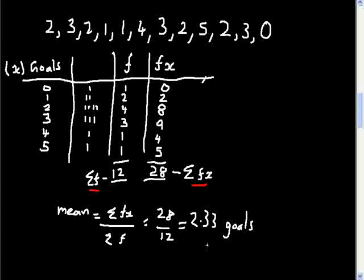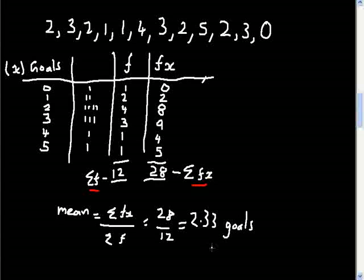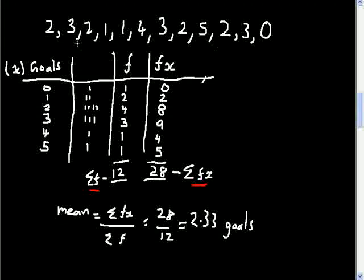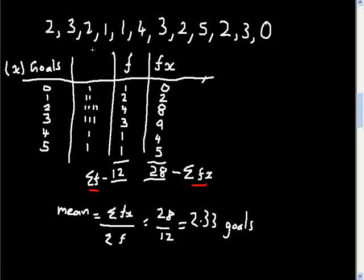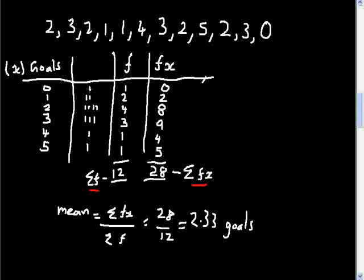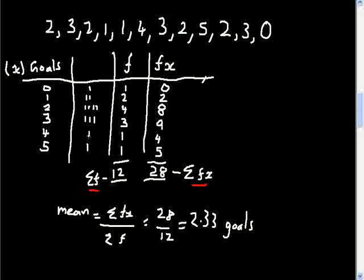So the mean is 28 divided by 12, which equals 2.33. For the median, you need the data in ascending order. The frequency table is already arranged in ascending order — zero, then one one, then two two two two, and so on.